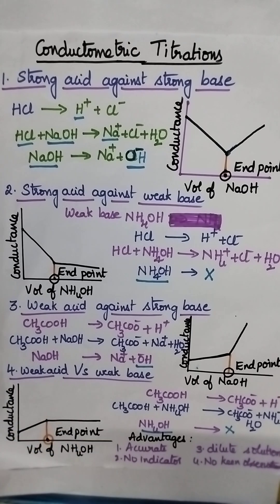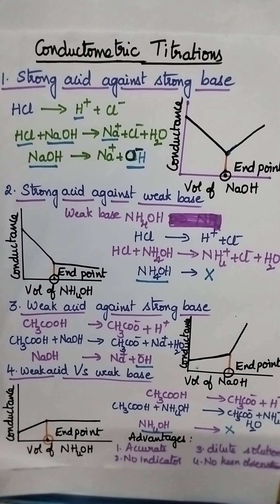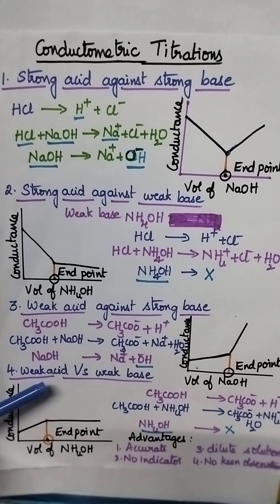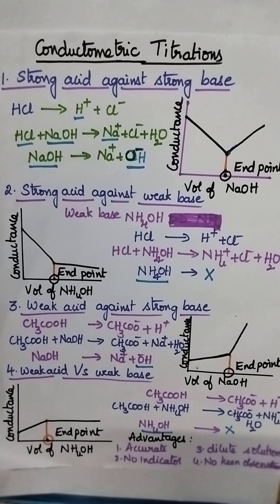Coming to the advantages of conductometric titrations over volumetric titrations: these conductometric titrations are more accurate, they are best for dilute solutions, and highly suitable for the titration of weak acid against weak base. There is no need of using an indicator, hence no keen observation is required.